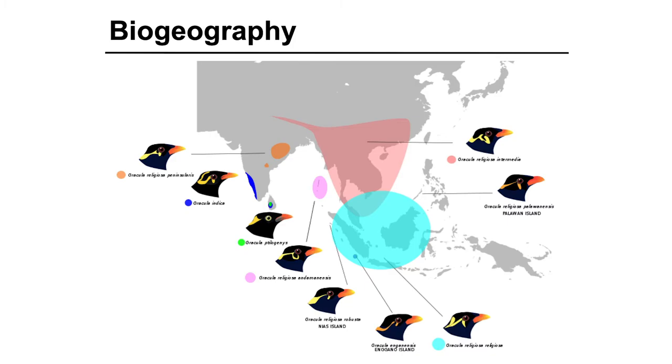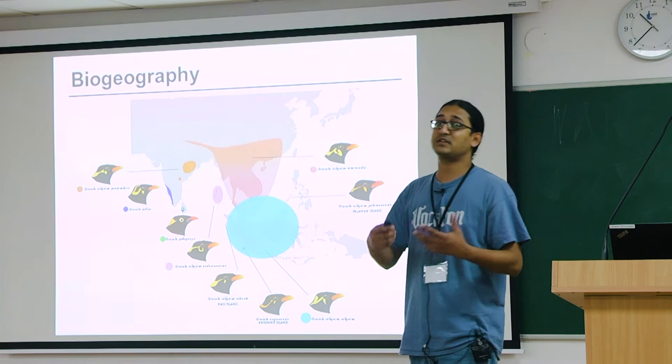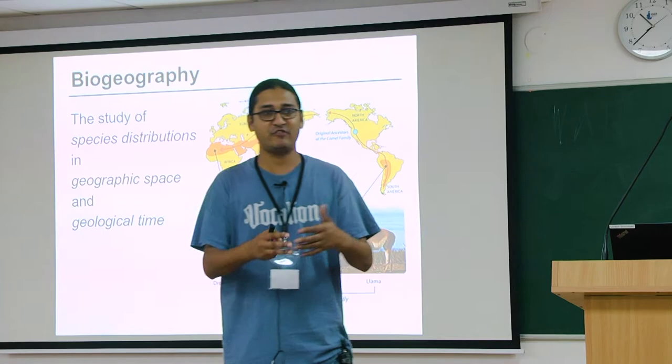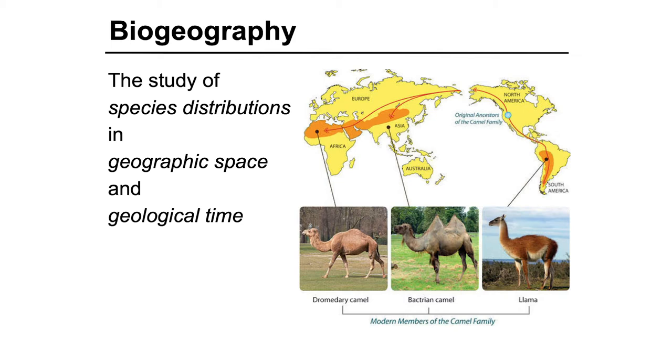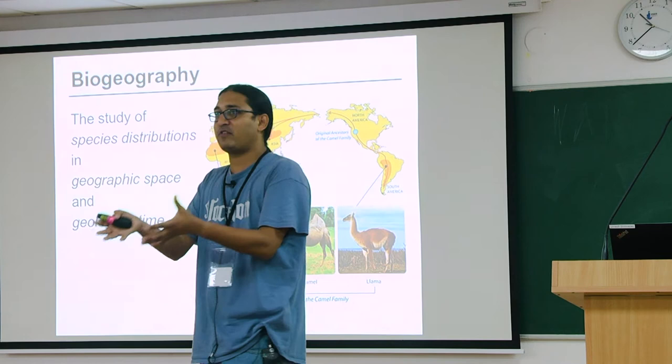Biogeography is interested in asking: how did this come to be? Why are species found in certain parts of the world? Why are they not found in certain parts? Why are certain species found with other closely related species? Biogeography is basically the study of species distributions or species ranges, both in geographic space and in geological time. We look at patterns that exist today and try to understand them in the light of what's happened in the past.